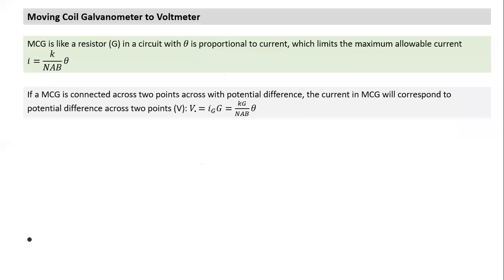The current i can be written in the form proportional to theta. Substituting, we find that the potential difference across the terminals of the MCG is also proportional to theta. So by measuring theta, we can measure V. Since voltage is proportional to current, and current is proportional to theta, voltage is also proportional to theta.